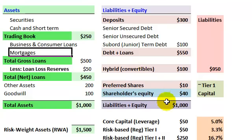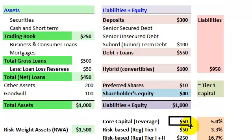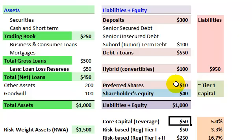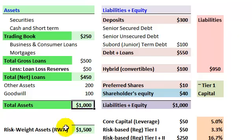Let's briefly look at three ratios we've been reading about. First: the core capital or leverage ratio. This comes right off the balance sheet. We have core capital of $50 — that's the common equity, the shareholders with the residual claim, plus the preferred shares. That's $50 in core capital divided by total assets of $1,000, giving us a 5% core capital or leverage ratio for the bank.